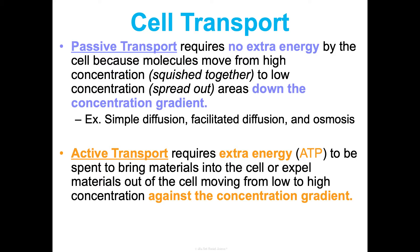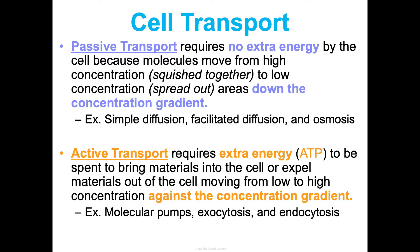Active transport requires extra energy in the form of ATP so that we can bring things into the cell or expel things out. We're moving things from low to high concentration — against the gradient. Think about standing at the bottom of a slide wanting to get to the top: you have to exert energy to move from low to high. It won't naturally happen. Examples we'll talk about are molecular pumps, exocytosis, and endocytosis.